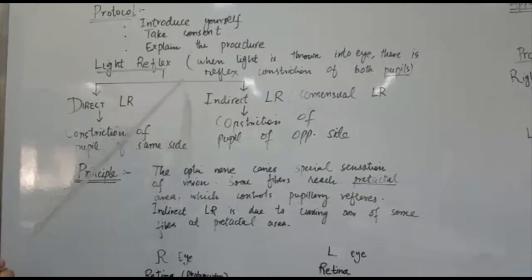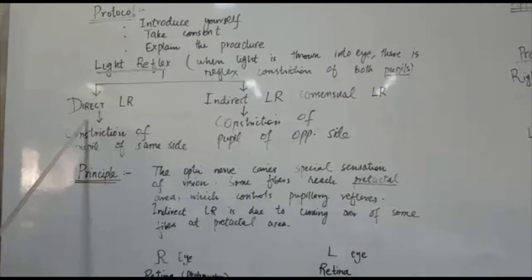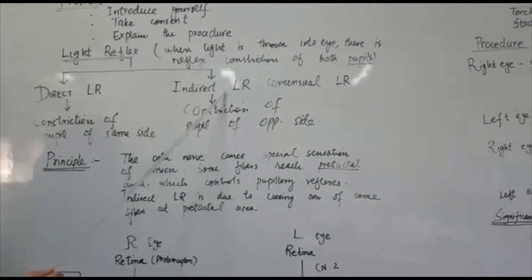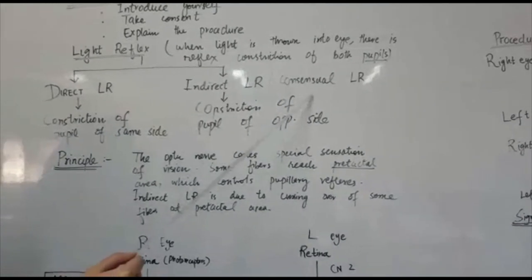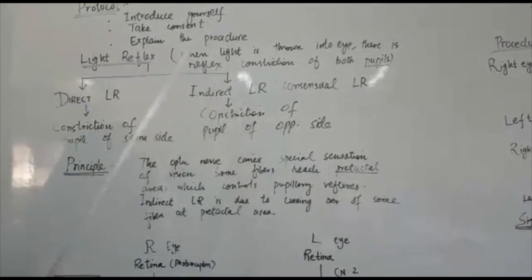So what are the two types of this light reflex? One is direct light reflex and the other is indirect light reflex, which is also called consensual light reflex. Both these are the names for the same reflex.